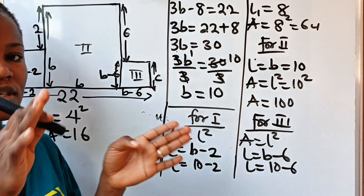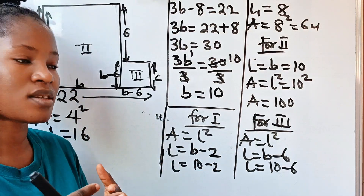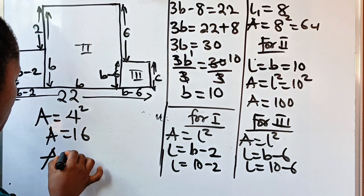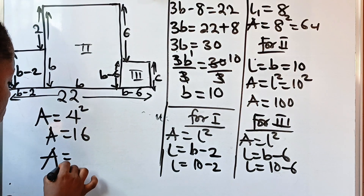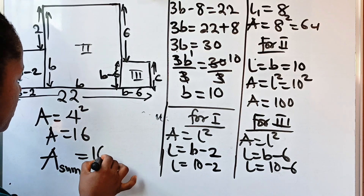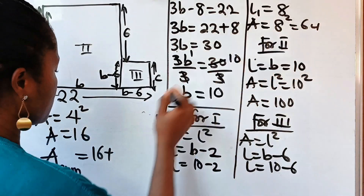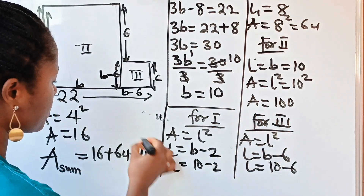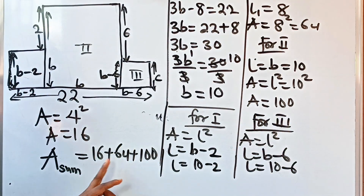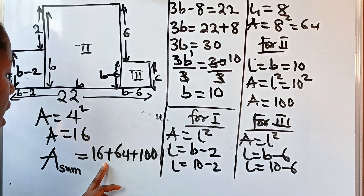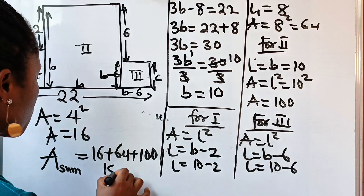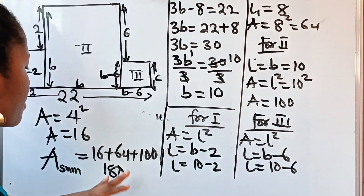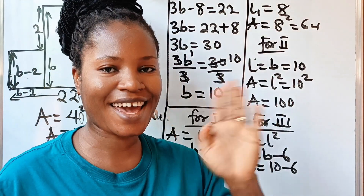Now we collect all the areas and add them together, because that is what the question asks. The sum of the areas is equal to 64 plus 100 plus 16. We have 64 plus 16 giving us 80, and 80 plus 100 giving us 180. So the answer is 180 units squared. Thank you so much for watching. See you in my next video. Bye.